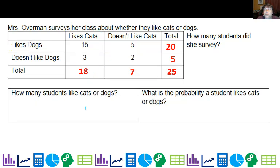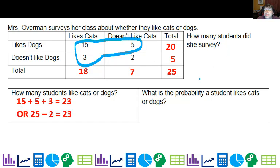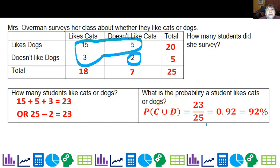So how many students like cats or dogs? Well, if they like cats or dogs, that's probably right in here. So it would be 15 plus 5 plus 3, which is 23. Or I could just say 25 minus this person here who doesn't like cats or dogs, and that gives me the same answer. So the probability would be 23 over 25 that a student likes cats or dogs. So that would be 92 percent.